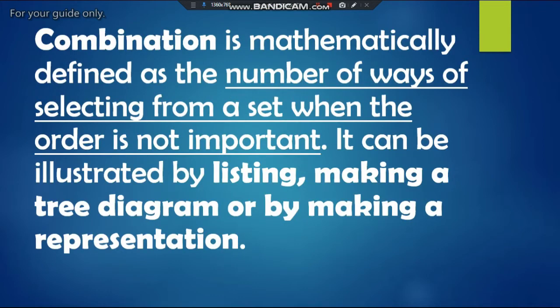So what do we mean when we say combination in mathematics? Combination is mathematically defined as the number of ways of selecting from a set when the order is not important. It can be illustrated by listing, making a tree diagram, or by making a representation as was shown before.